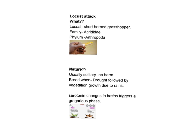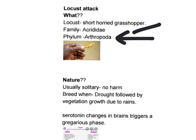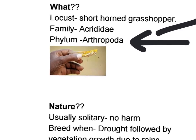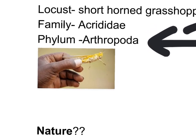A locust is a short-horned grasshopper. They belong to the family Acrididae and the phylum Arthropoda. This is how a locust looks like.